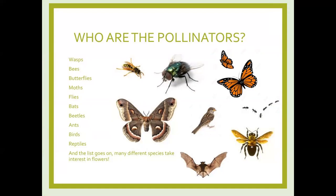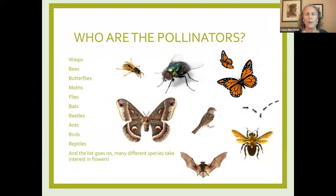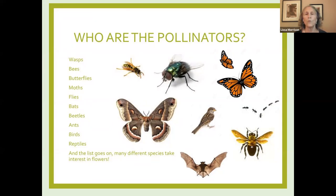Let's talk about who the pollinators are. Most of us, when we think of a pollinator garden, automatically think of butterflies and moths, maybe hummingbirds, but there are many different kinds of pollinators. There are about 4,000 native bees in our region, around 750 native butterflies, and thousands of flies, wasps, and beetles that are pollinators. There are also some unusual ones like bats and ants.